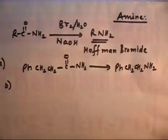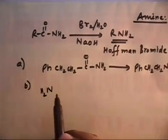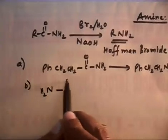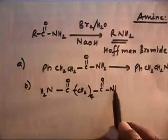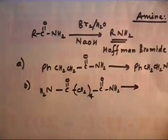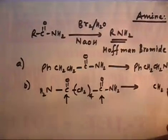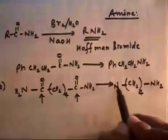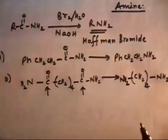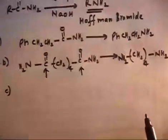For part B, we have a compound with NH2-CO on both sides: NH2CO-(CH2)4-CONH2. When reacted with alkaline bromine water, both CO groups on each side are removed. The product will be H2N-(CH2)4-NH2, with an NH2 group on each side.